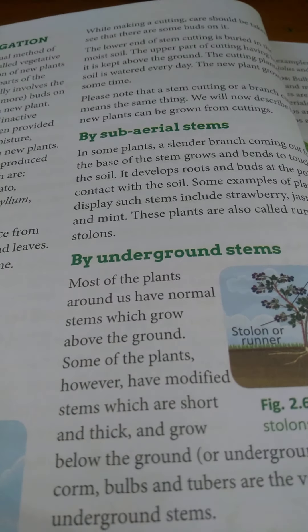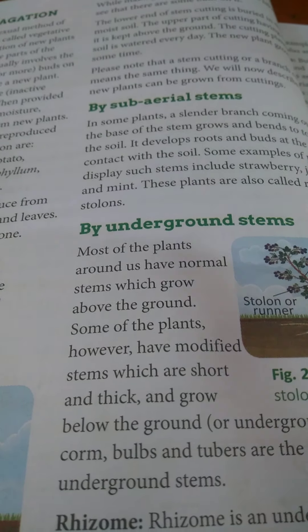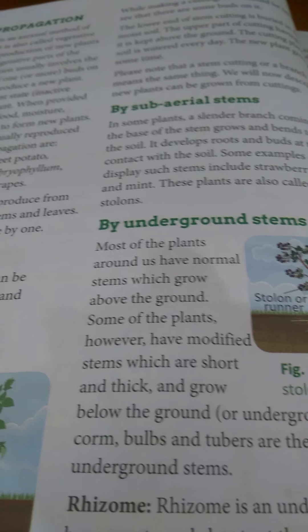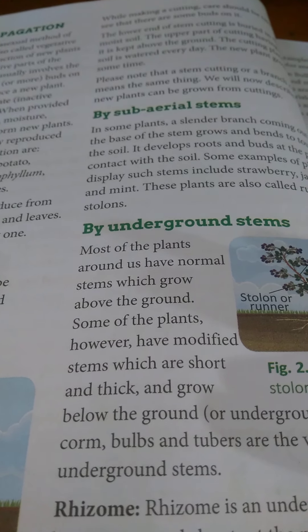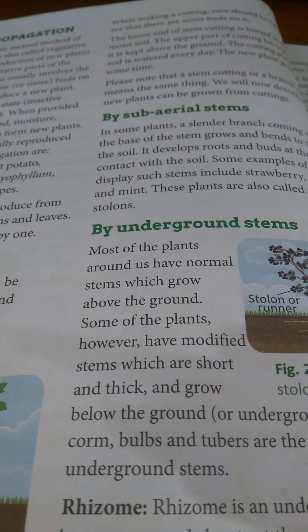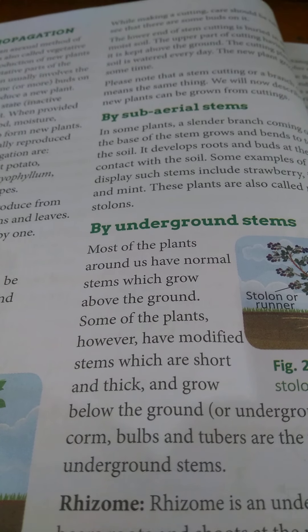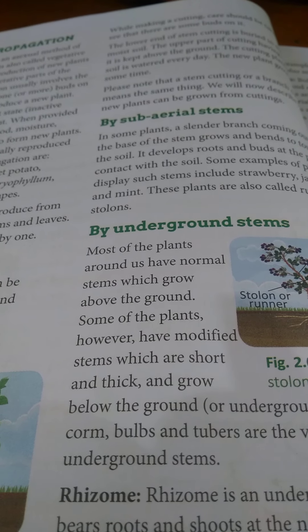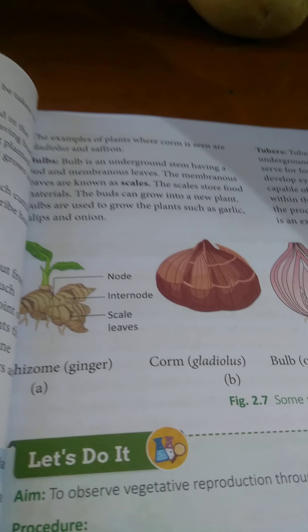A hedge around a lawn can be developed by this sub-aerial stem method. Then comes reproduction by underground stems. Stems are generally above ground, but there are some modified stems present underground, and from these underground stems new plants can also be developed because they have buds on them.